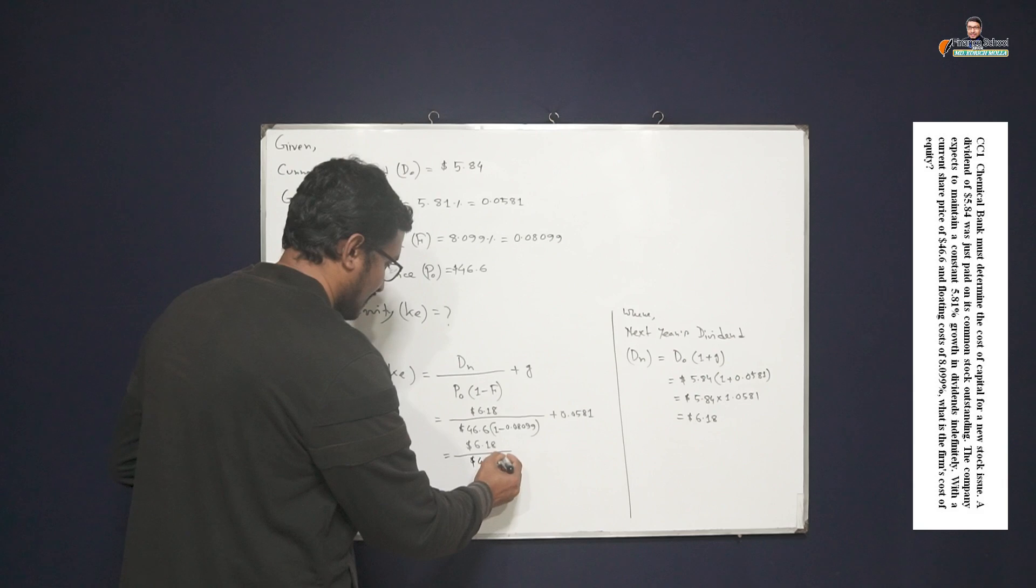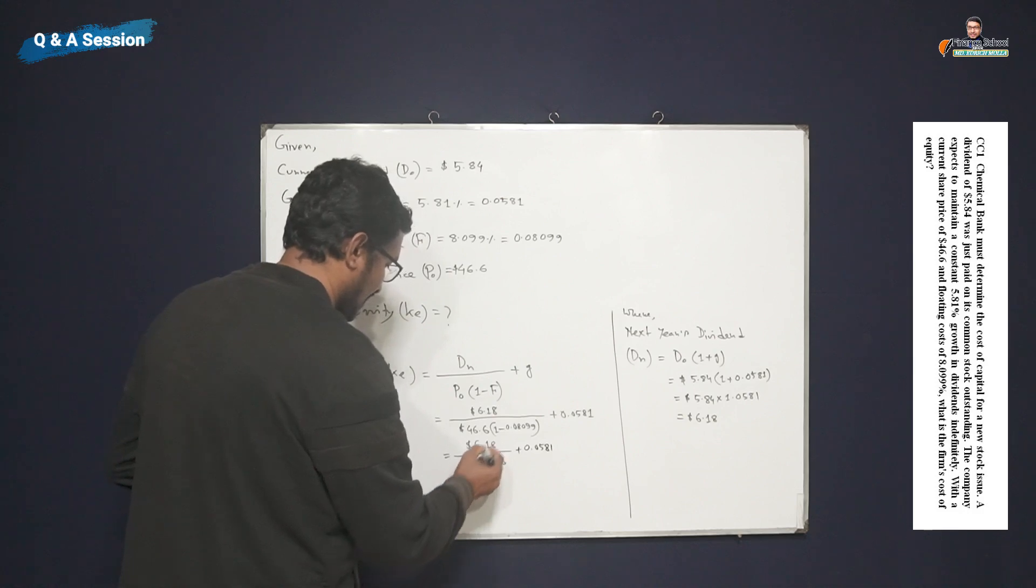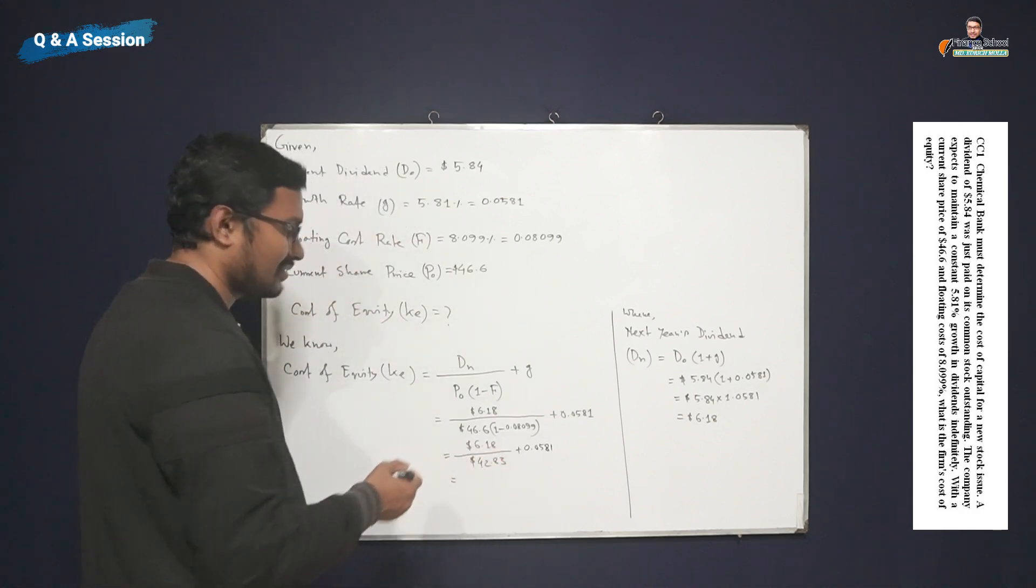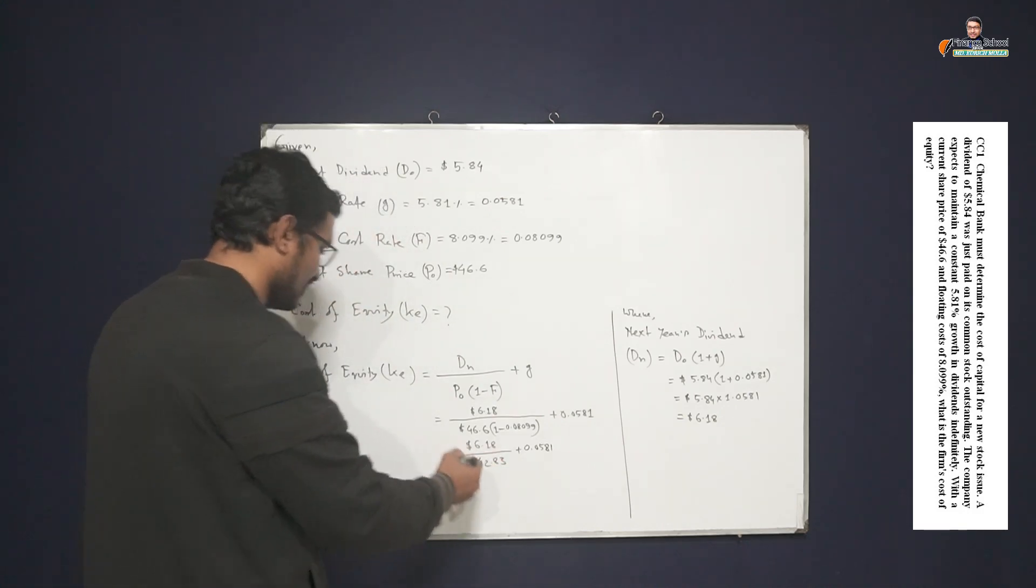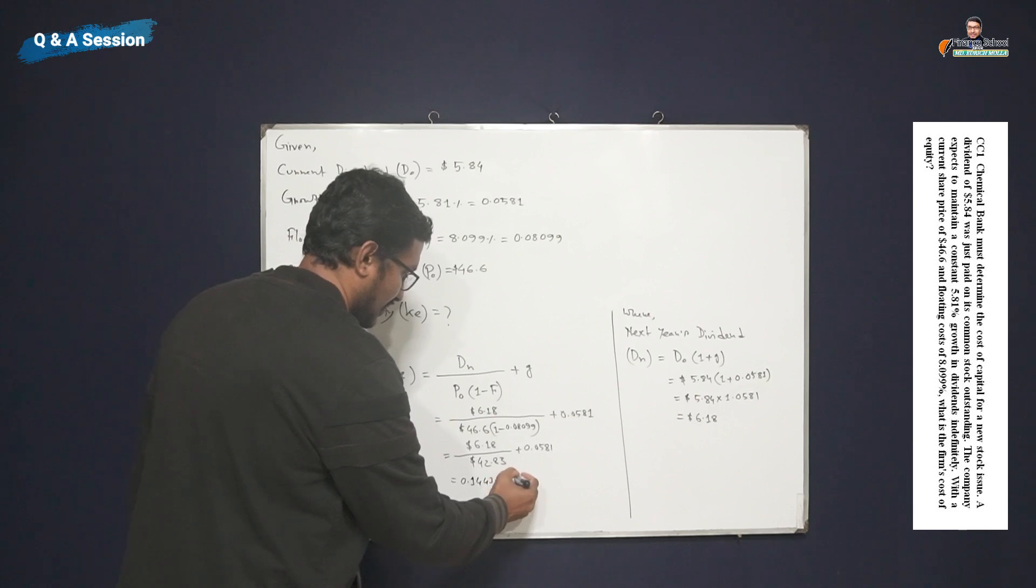42.83 plus 0.0581. And if we divide 6.18 by 42.83, then it will be 0.14443 plus 0.0581.